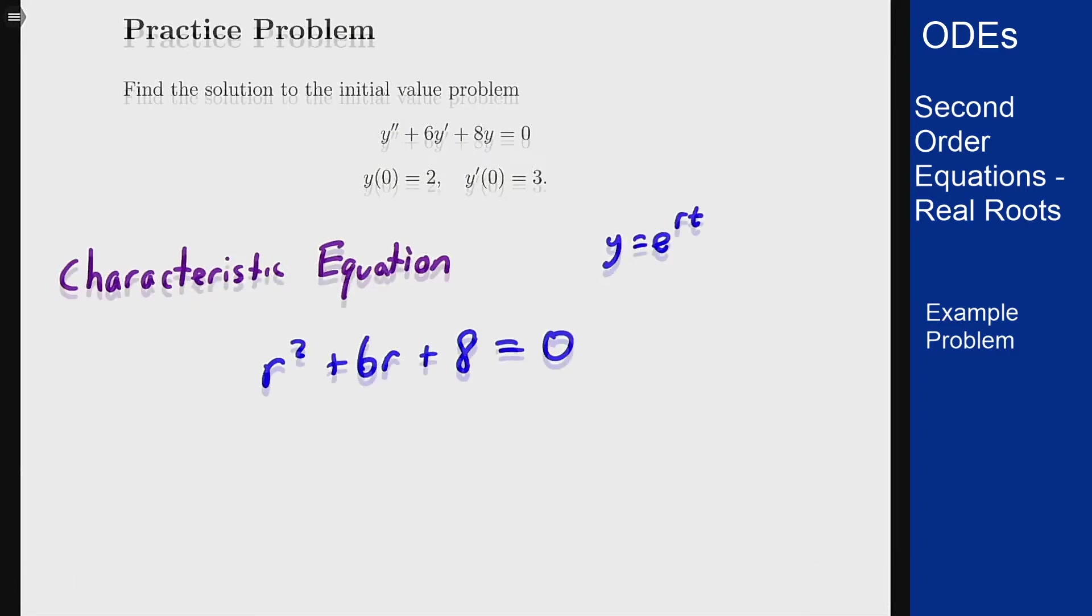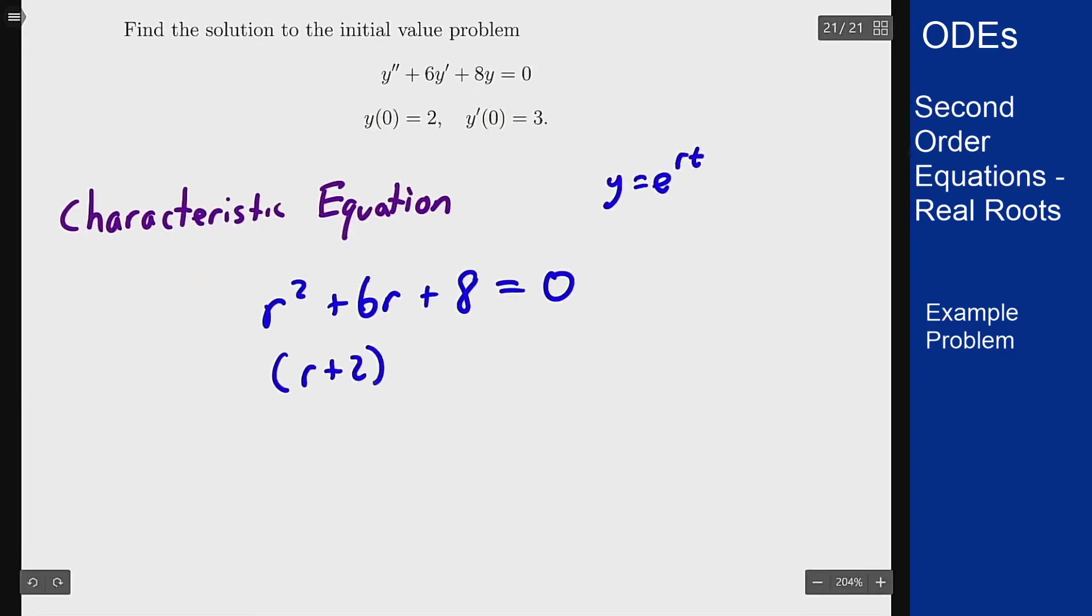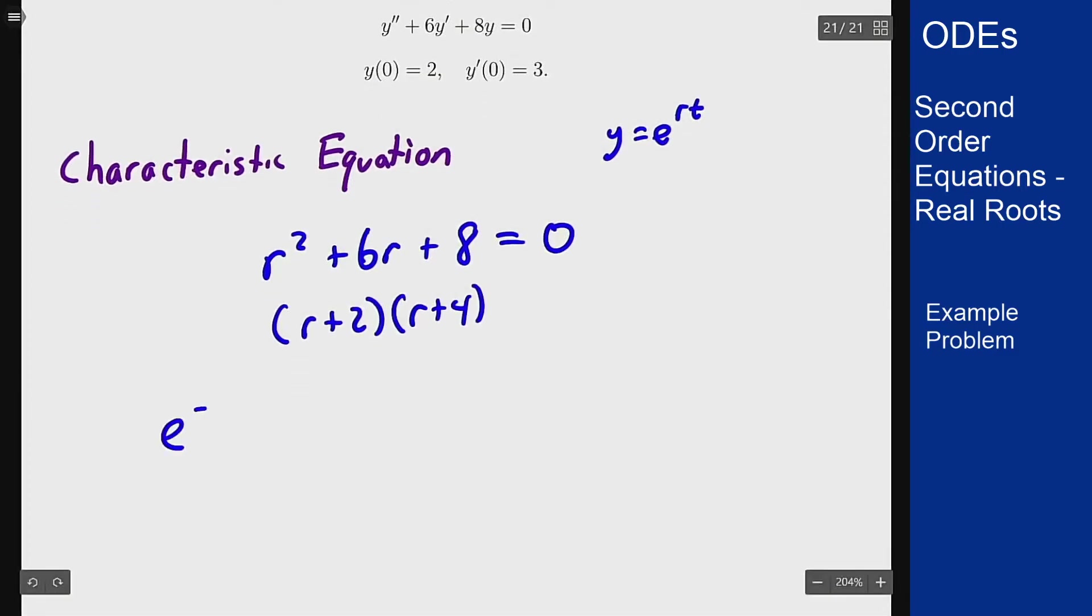This can then factor as r plus 2 times r plus 4, which means that our two solutions are e to the minus 2t and e to the minus 4t.